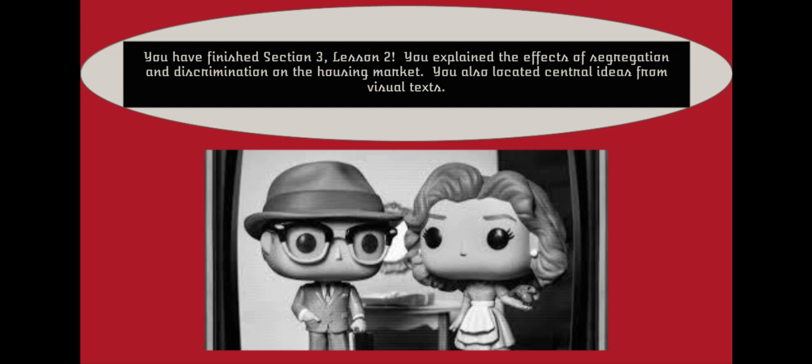Congratulations! You have finished Section 3, Lesson 2 of the Homeownership Unit. In this lesson, you explained the effects of segregation and discrimination on the housing market. You also located central ideas from visual texts.